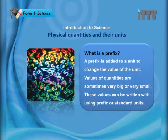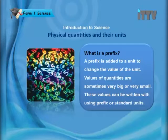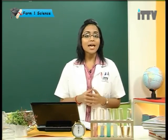Now, what is a prefix? A prefix is added to a unit to change the value of the unit. Values of quantities are sometimes very big or very small. These values can be written using prefixes or standard units. For example, the number 1 million is very long to write — you can shorten it by using a prefix.